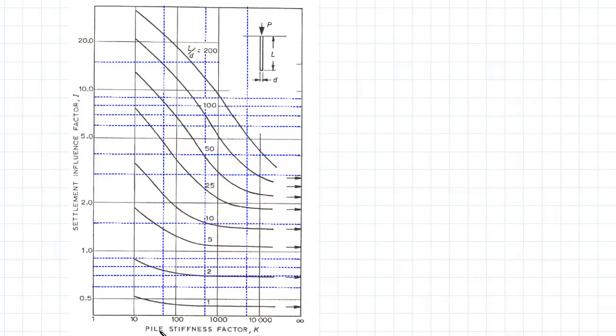In this chart here, once you have determined a value for K, you need to find the length to diameter ratio, and then you can project across horizontally to get a value for the influence factor I.